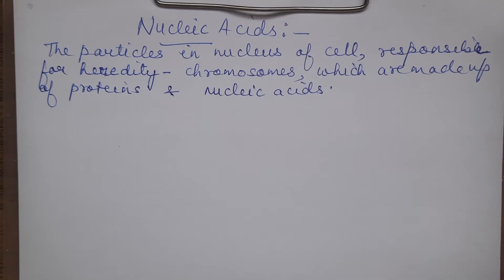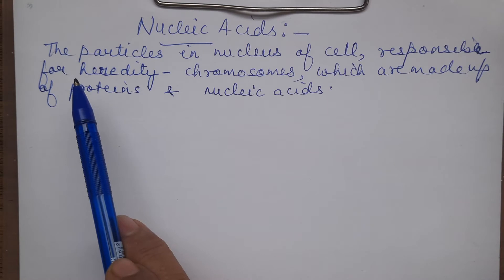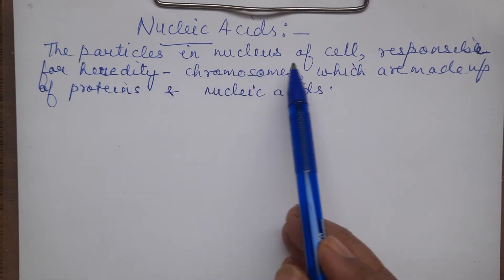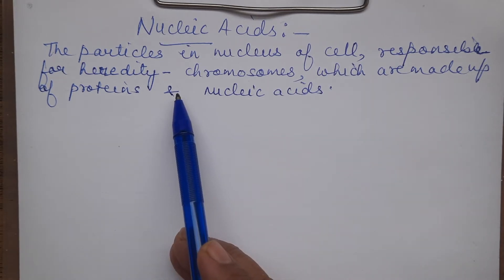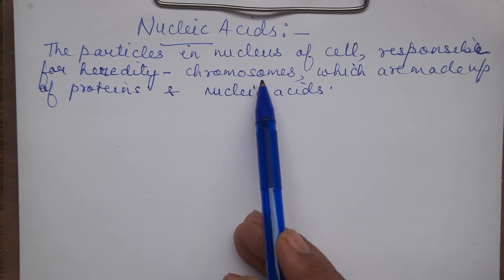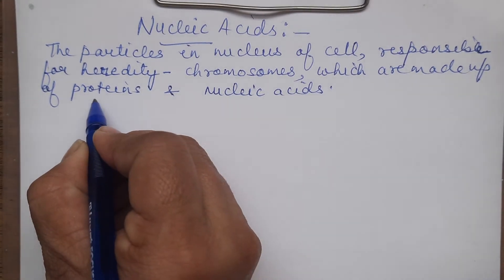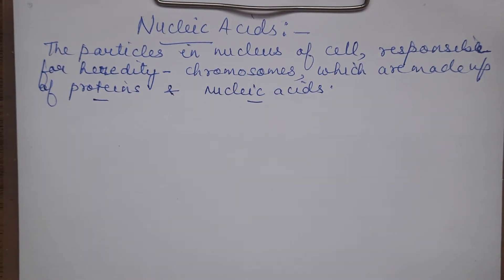Good morning children. Hope you all are ready to attend the next lecture of biomolecules. In today's lecture we will be talking about nucleic acids. First let us see what nucleic acids are. The particles which are there in the nucleus of the cell and are responsible for heredity are called chromosomes, which we all know, and these chromosomes are made up of proteins and nucleic acid.